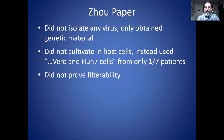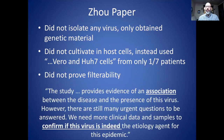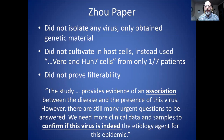The Zhao paper: they didn't isolate any virus — again they obtained genetic material using the previously described procedure. They did not cultivate in host cells; they used Vero cells and HUH7 cells, but only for one out of seven patients, and did not prove filterability. Here's what they wrote in their conclusion: 'This study provides evidence of an association between the disease and the presence of the virus. However, there are still many urgent questions to be answered. We need more clinical data and samples to confirm if this virus is indeed the etiological agent for this epidemic.' So the authors were honest, understood the limitations of their research, and put an appropriate conclusion.